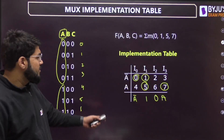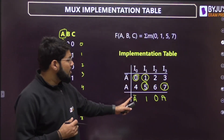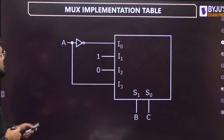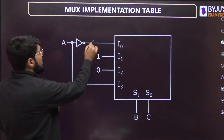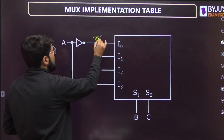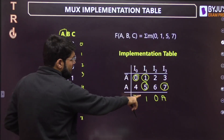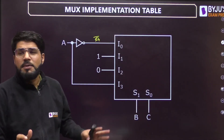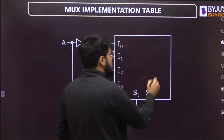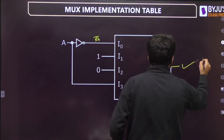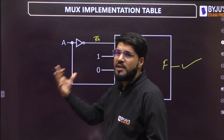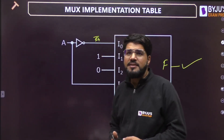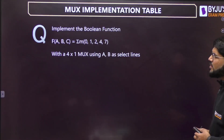So in terms of the diagram, the input lines will be: A-bar, 1, 0, A. A-bar goes to I0, then 1, then 0, then A goes to I3. This particular multiplexer will implement the given Boolean function.